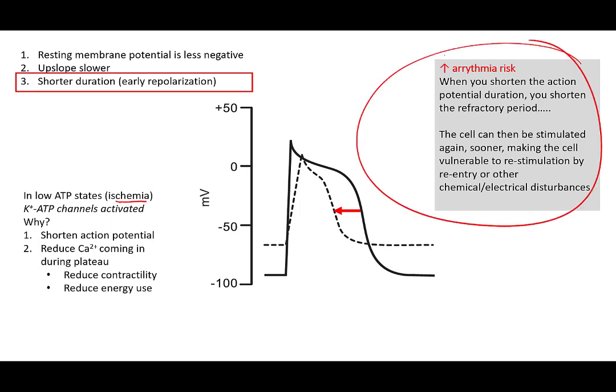One of the problems, however, is when you shorten the action potential, you increase your arrhythmia risk. That's because you shorten the refractory period, then the cell is ready to go. It can be stimulated sooner, making the cell vulnerable to become re-stimulated. There could be a number of chemical agents or various re-entry electrical disturbances. So the risk for arrhythmias are also greater in these ischemic cells while they're trying to protect themselves.